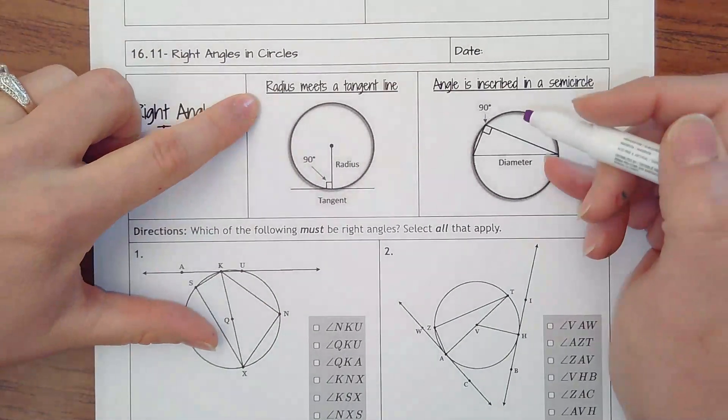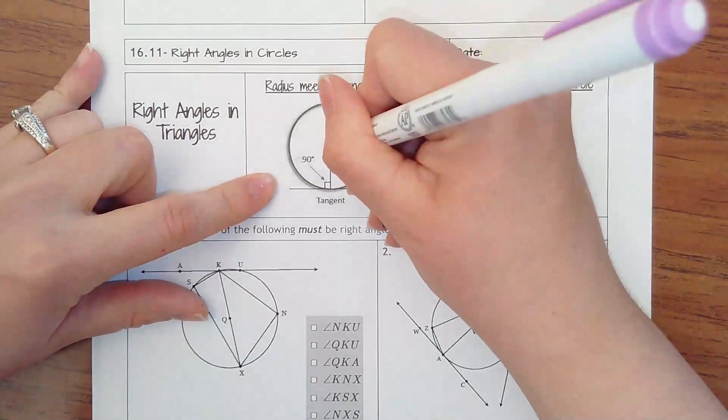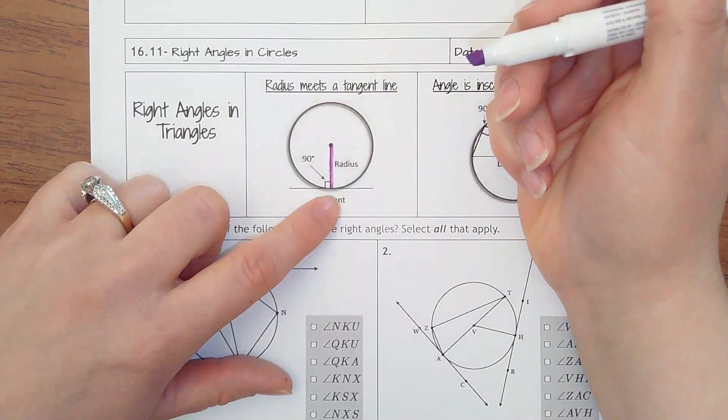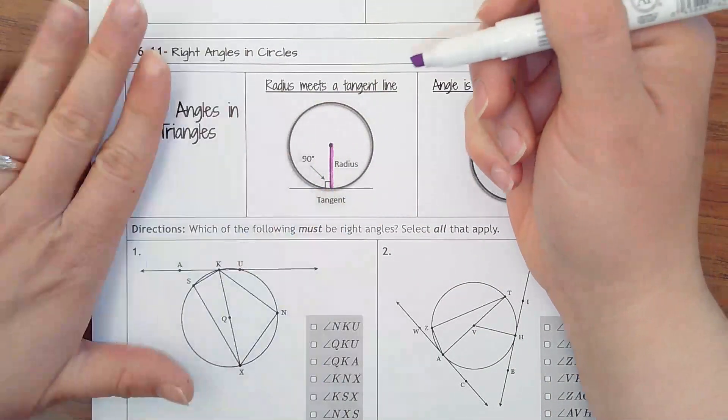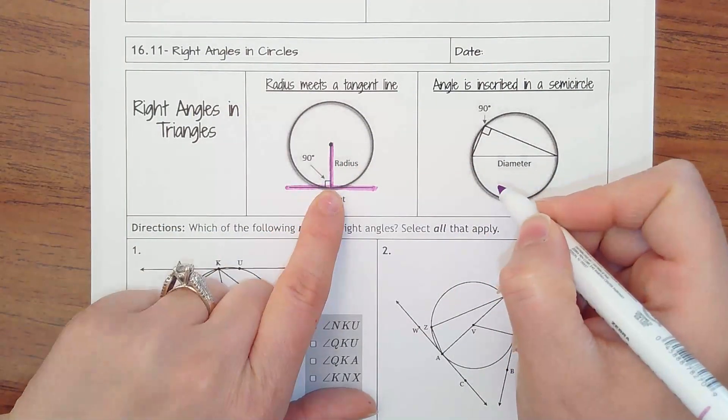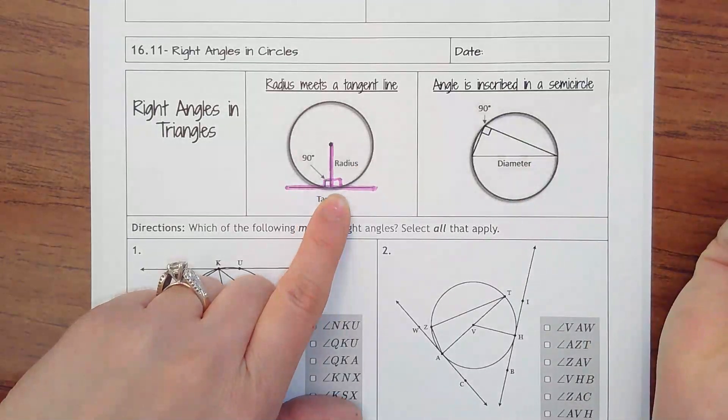And the first time is when you have a radius, meaning a tangent line. So you can see in this picture that here's a radius coming from the center to the outside of the circle, and that same point that it touches is also where there's a tangent line touching at that point. So this creates a 90 here and also here.